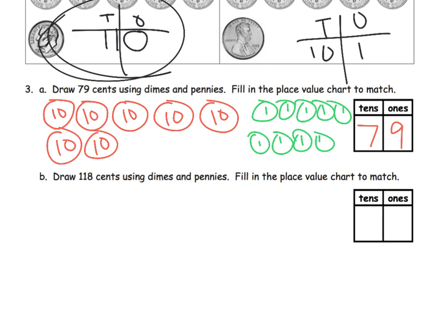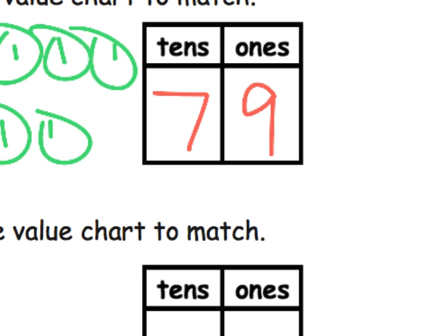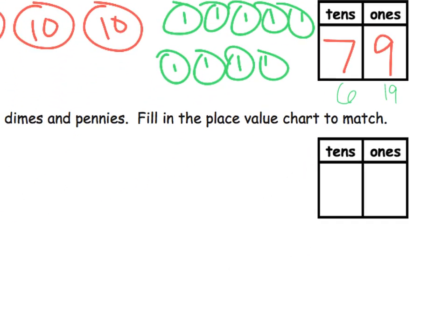Although if a student does something other than seven dimes and nine pennies, verify, make sure it actually does work and equal 79 cents. You may ask the student, how did you come up with the idea of, oh, one idea might be six dimes and 19 pennies. How did you come up with that? That would be an interesting question to ask a first grader.